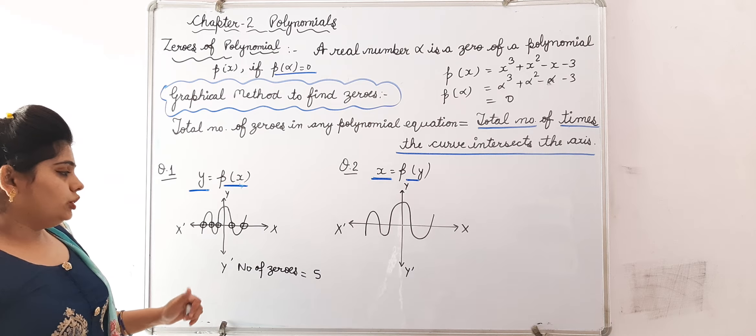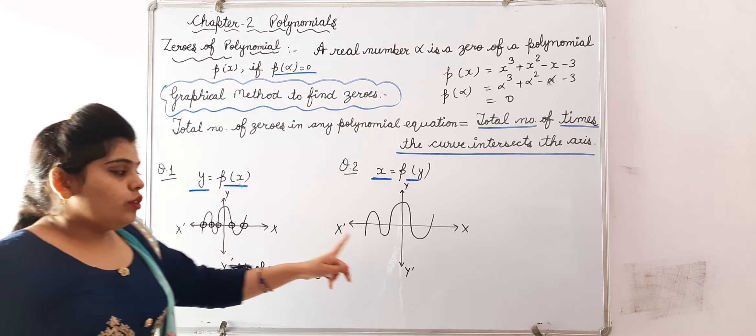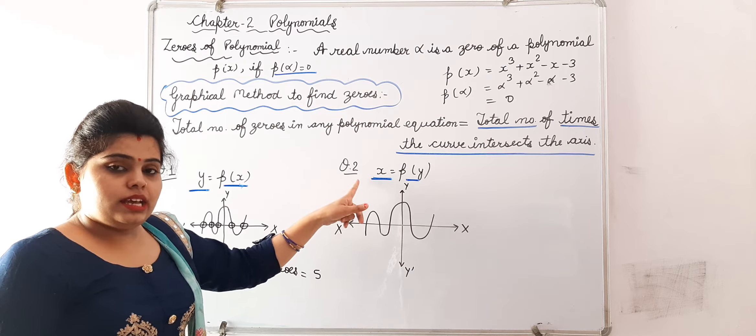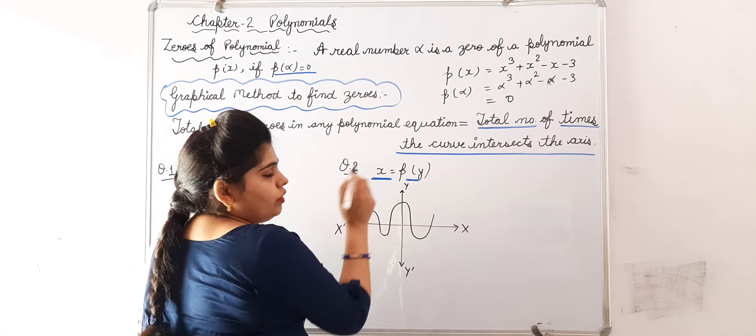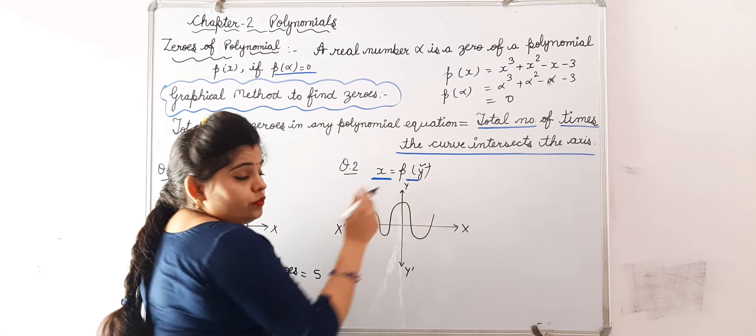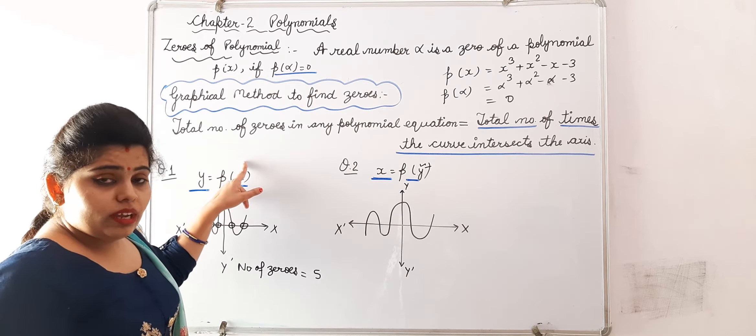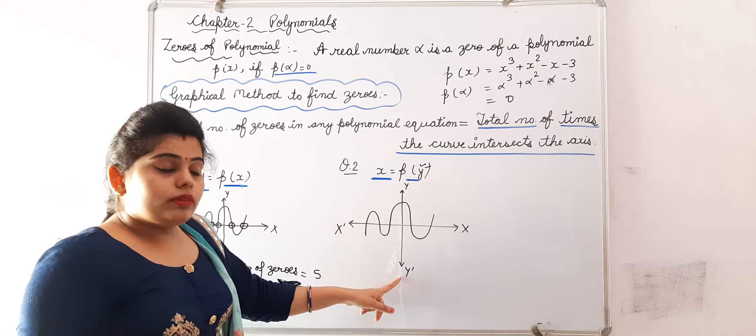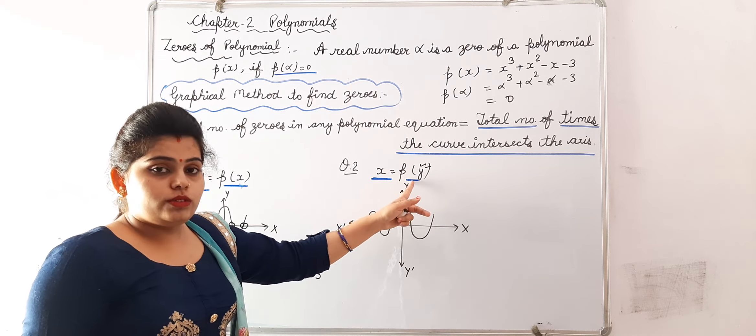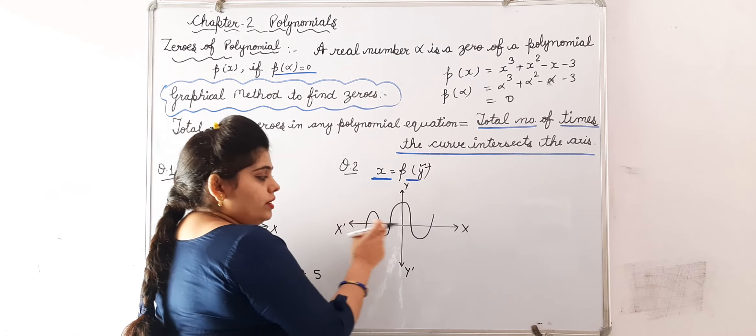In this question, suppose for same graph I have changed the statement. Now equation is x is equal to P of y. Means this function in the form of y variable - you will be given polynomial, on that axis we will check. What do we need to find out? Number of zeros.